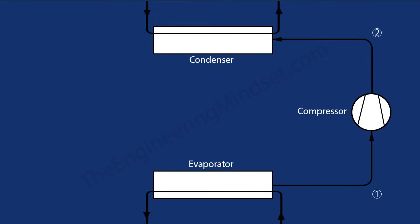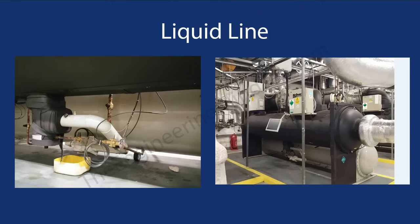As the refrigerant leaves the condenser it travels along what's known as the liquid line, which we'll refer to as Point 3 on the graphs. This is the liquid line you can see here — exiting the condenser, passing through and going into the expansion valve. There's also a king valve — this large block here — which isolates and traps the refrigerant inside the condenser should you ever need to perform maintenance.